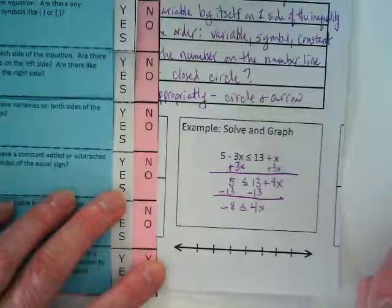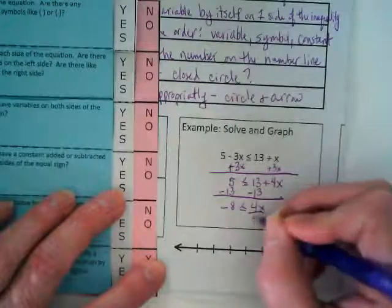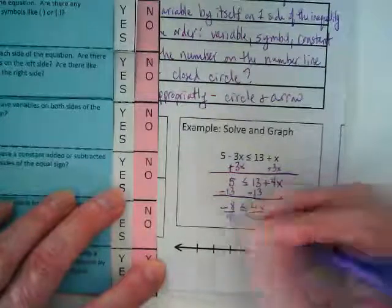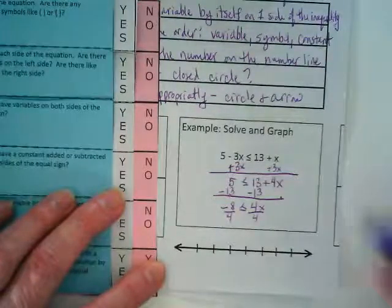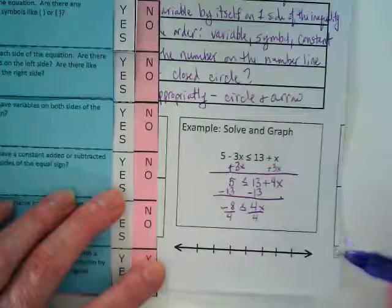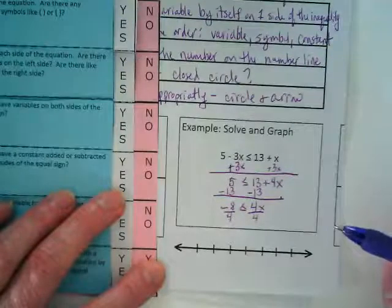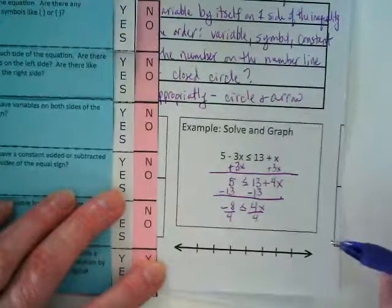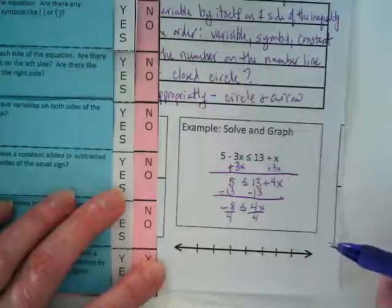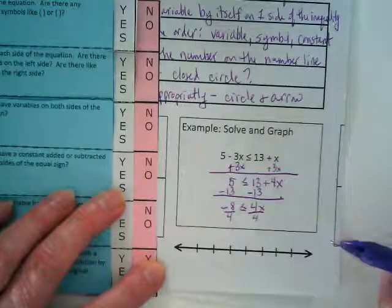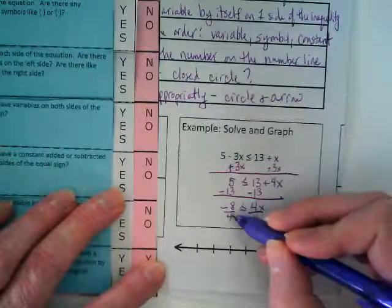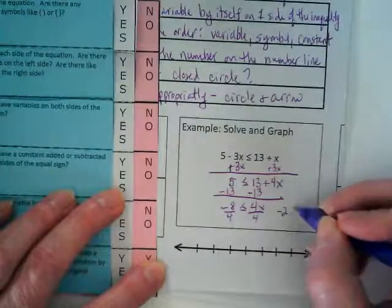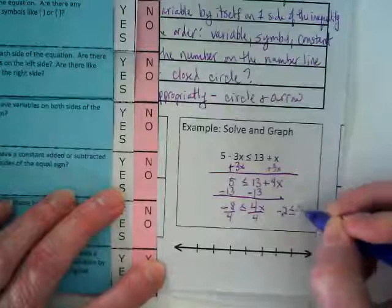What am I dividing by? 4x? No, just 4. Okay, am I dividing by a positive number or a negative number? A positive. Because I'm dividing by a positive, my symbol doesn't change, does it? So I end up with negative 8 divided by 4 is negative 2 is less than or equal to x.